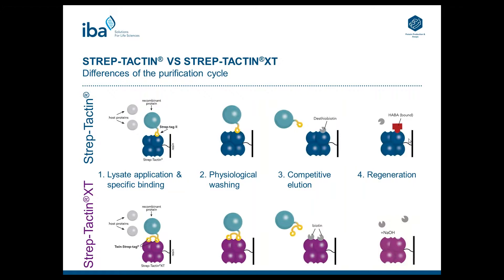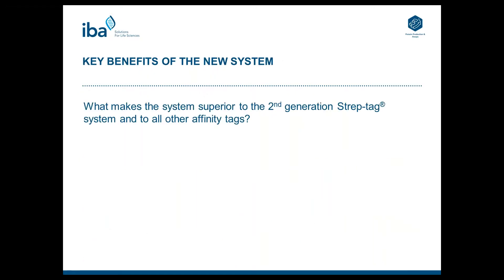Also, the regeneration differs. For Streptactin, you can use HABA — it is a yellowish solution which turns red upon binding to Streptactin, and it thereby competes with Desthiobiotin for the binding site. The color change also serves as a quality control for the resin; as long as HABA changes its color on the resin, it can be reused. HABA can be easily removed from the resin by addition of PBS or a similar physiological buffer. In the case of Streptactin XT, low concentrations of sodium hydroxide are used for regeneration. After this, HABA can also be applied as a quality control, but it cannot be used for regeneration.